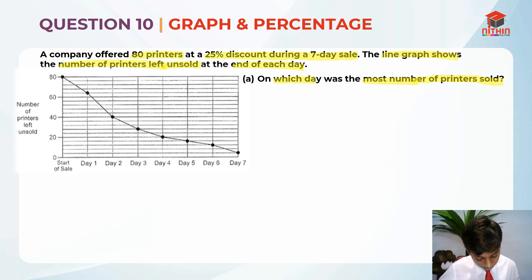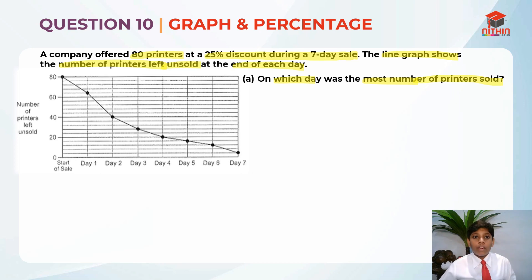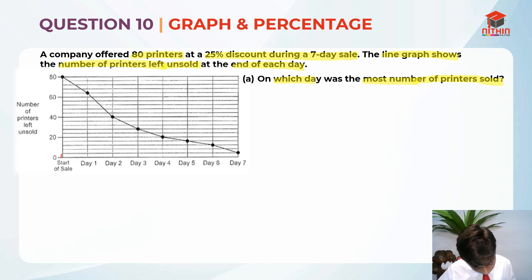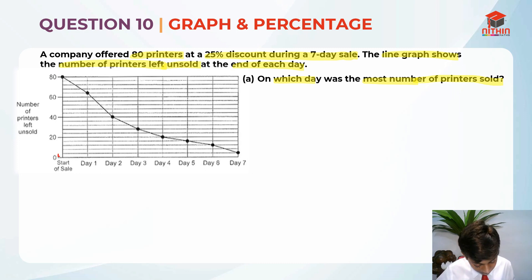So between 20 and 0, there are 5 gaps. 20 divided by 5 is 4. So each line represents 4 — giving us 4, 8, 12, 16, 20. Each line starts at 4, so it's just the 4 times table all the way up.